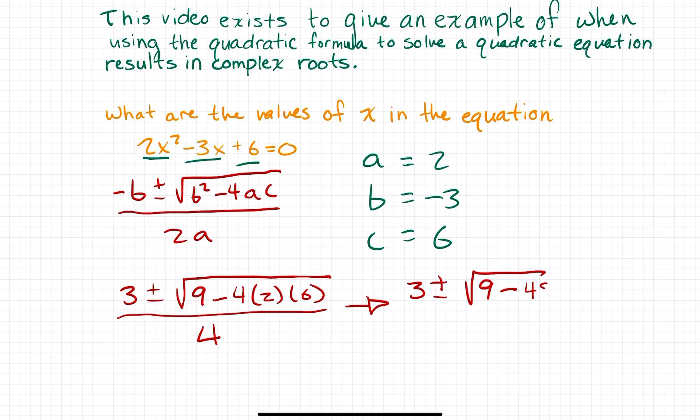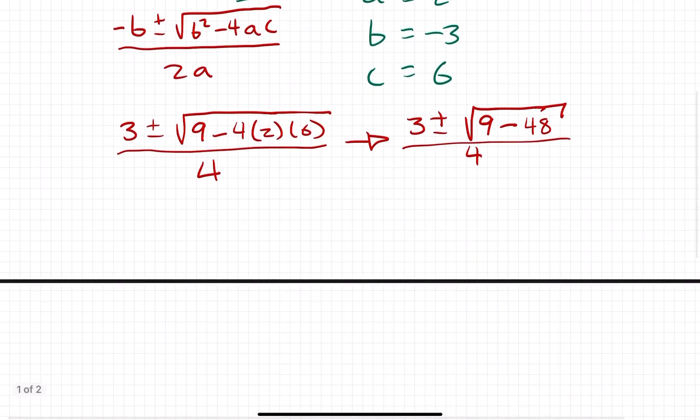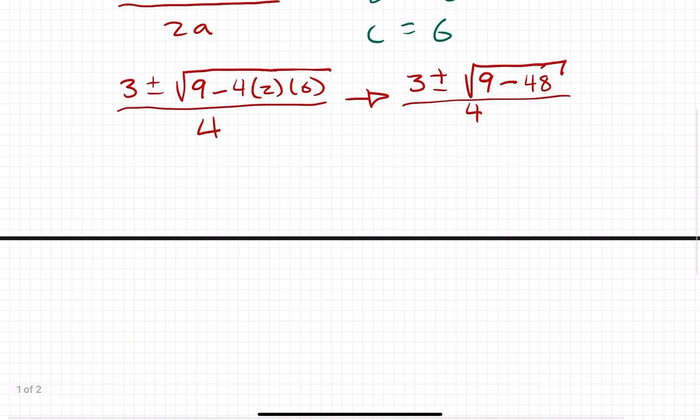So, 9 minus 48. And you can see here, you can already see that this is going to give us a negative number underneath the radical. This is all divided by 4. So, in the next step, we have 3 plus or minus the square root of negative 39 over 4.